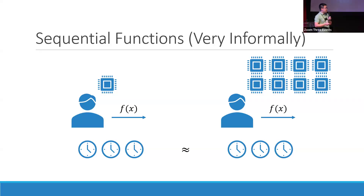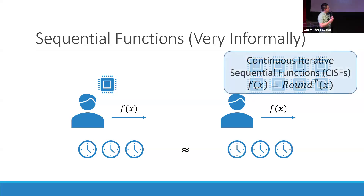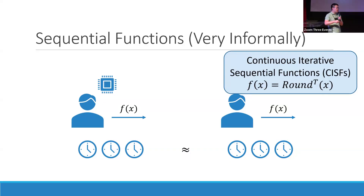A special class of sequential functions we will be working with are called continuous iterative sequential functions, or CISFs. Essentially there is a short round function, and you just keep iterating it over and over. This is a special class that we will be working with.